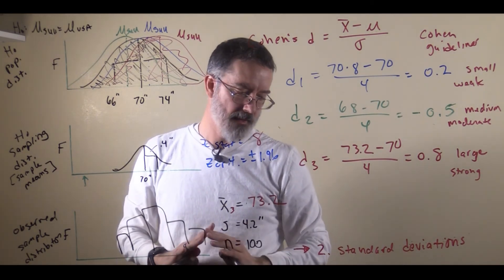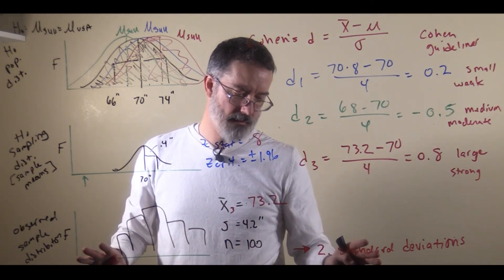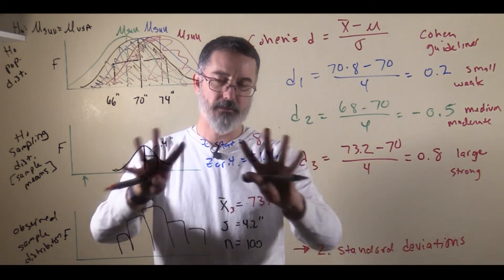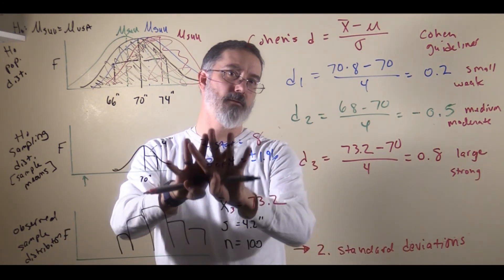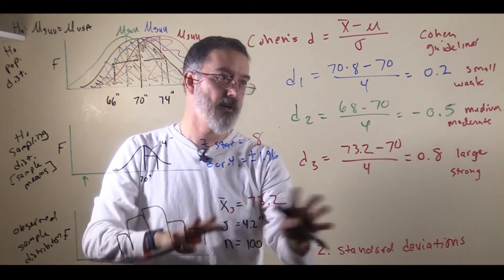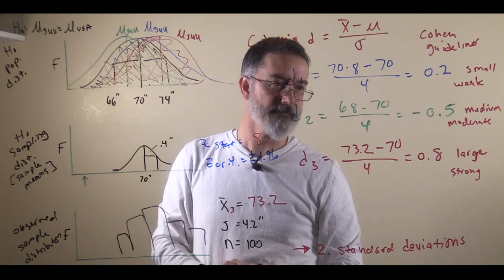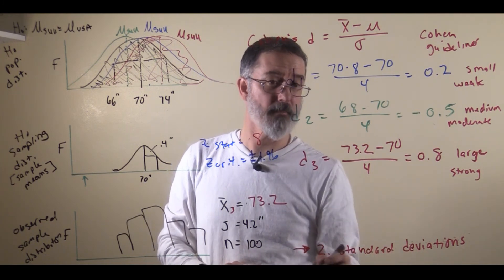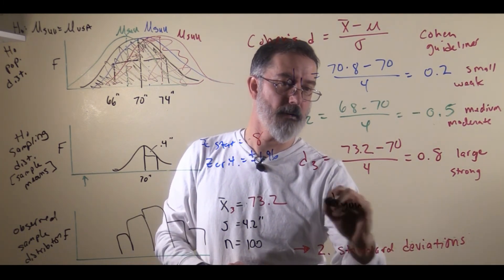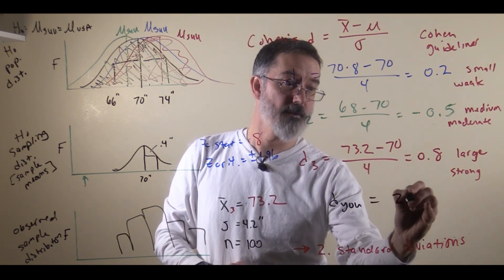In psychology, even when we find a really big effect — for example, comparing men and women — there is usually a lot of overlap among the two different types of people, even when we have something considered to be a large or strong effect. If you end up doing your research and get a Cohen's d effect size of around 2, you have actually found an extremely large effect for psychology.